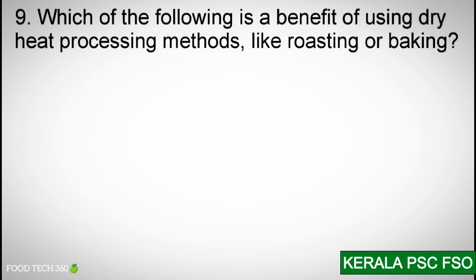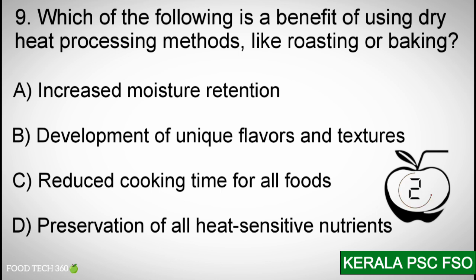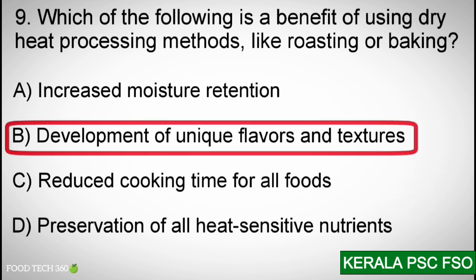Q9: Which of the following is a benefit of using dry heat processing methods like roasting or baking? Options: A) Increased moisture retention, B) Development of unique flavors and textures, C) Reduced cooking time for all foods, D) Preservation of all heat-sensitive nutrients. Correct answer: B — Development of unique flavors and textures.